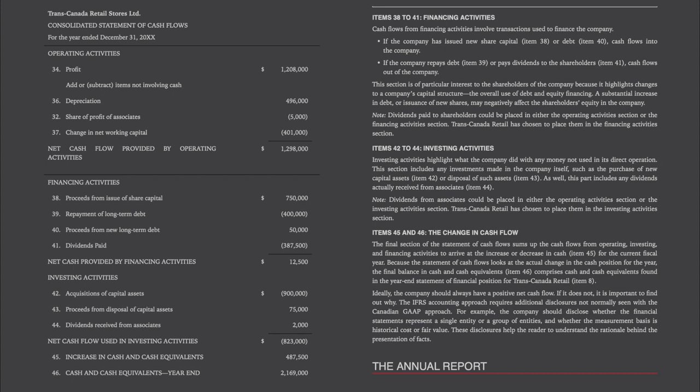Ideally, the company should always have a positive net cash flow. If it does not, it is important to find out why. The IFRS accounting approach requires additional disclosures not normally seen with the Canadian GAAP approach. For example, the company should disclose whether the financial statements represent a single entity or a group of entities and whether the measurement basis is historical cost or fair value. These disclosures help the reader to understand the rationale behind the presentation of facts.